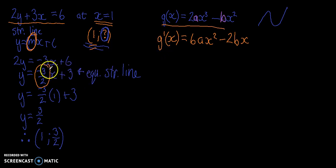Now at the point where x equals 1, the gradient is going to be minus 3 over 2. So we're going to swap g, the gradient, the derivative, make it equal to negative 3 over 2. And rather than putting in x's, we're going to put in the value of x that we're given. So now we have 6a times 1 squared minus 2b times 1.